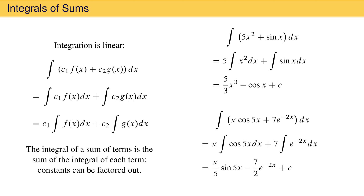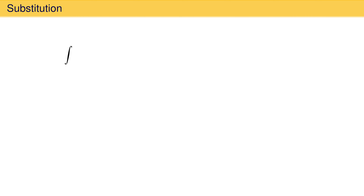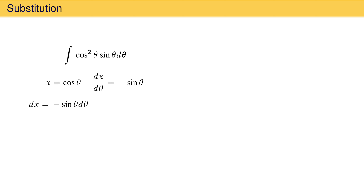The fact that integration is linear allows us to transform more complicated integrals into a set of simpler integrals, making integration possible using simpler rules. One technique for reducing an integral to a simpler form is called substitution, illustrated with the integral of cos squared theta times sin theta d theta. This integral is not listed in any of the tables discussed previously, but we can reduce it to a familiar form by defining the variable x to be equal to cos theta. Taking the derivative of x with respect to theta gives negative sin theta, so dx equals negative sin theta d theta.